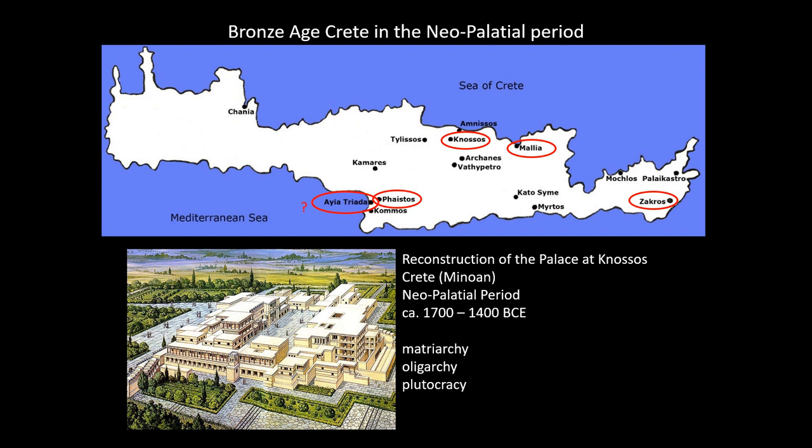We'll return to the Cycladic islands later. For now, let's move on to Crete and talk about palaces. In the second millennium, there was a significant shift in Cretan settlement patterns. Prior to this, in the third millennium, settlements were relatively small and scattered. But in the second millennium, we start to see the construction of large, ornate palaces, with four palace sites eventually emerging — marked on the map. A fifth possible site, Aya Triada, is still debated due to its palatial architectural features but smaller size.